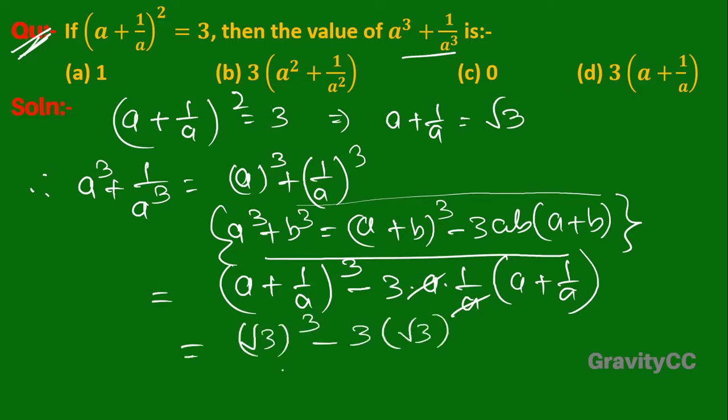So 3√3 minus 3√3 equals 0. Answer. So option C is the correct answer.